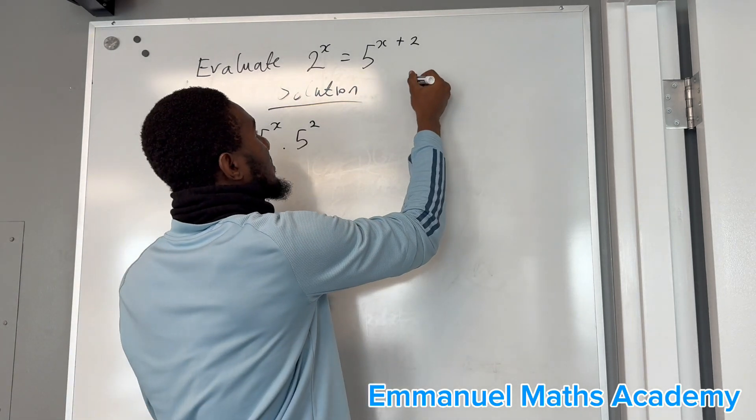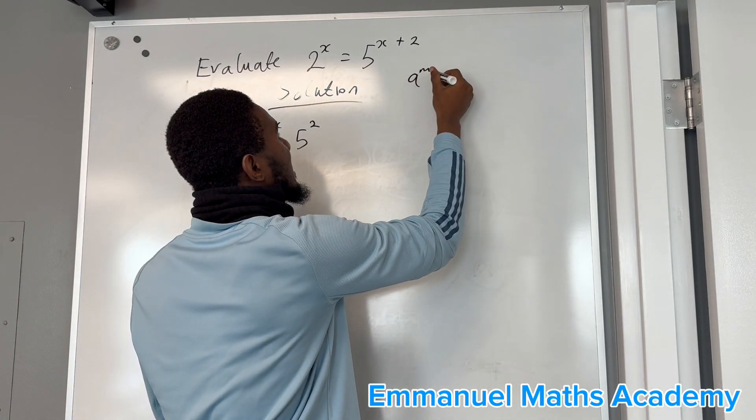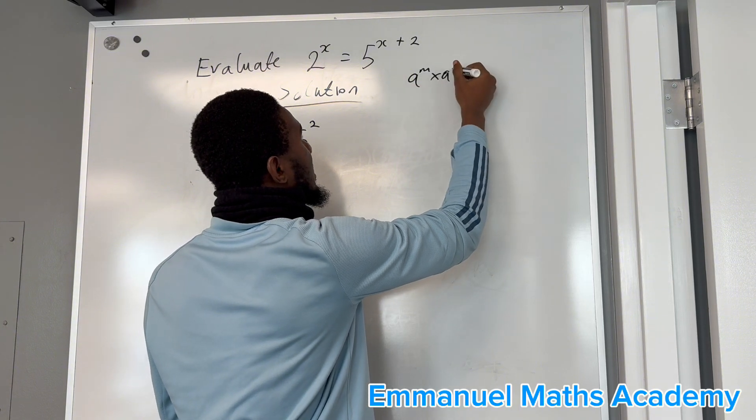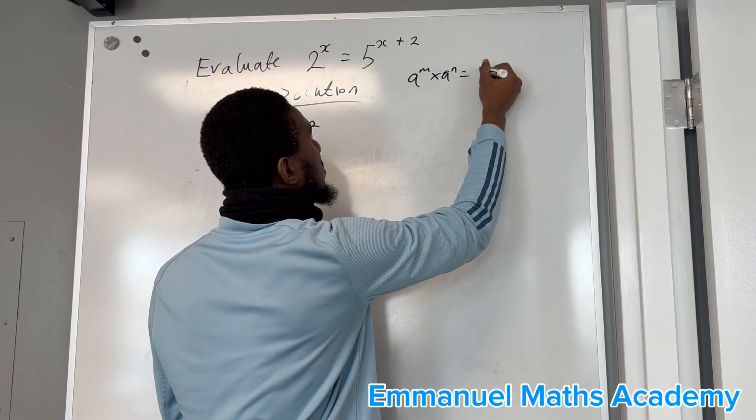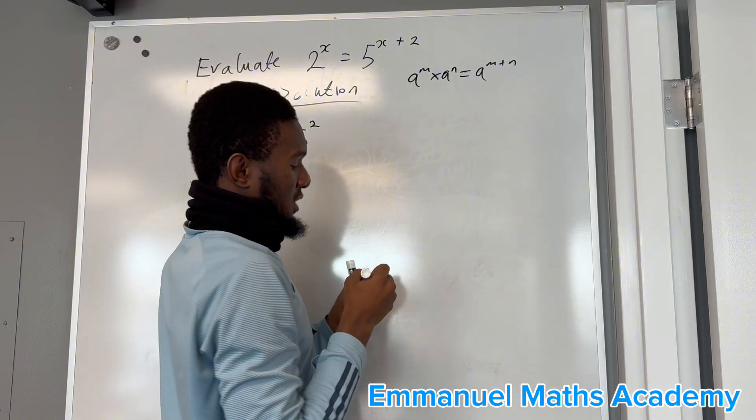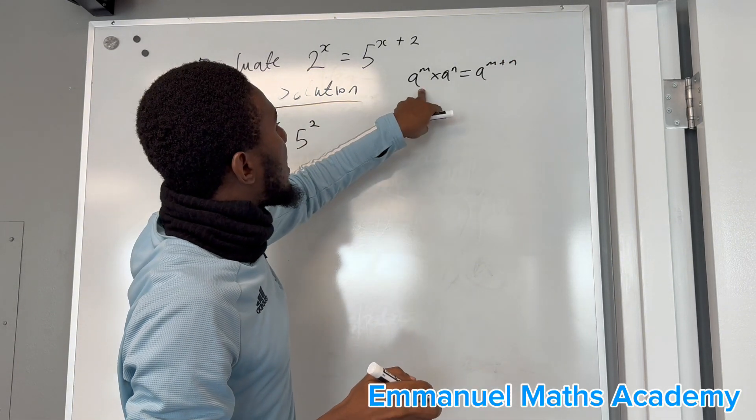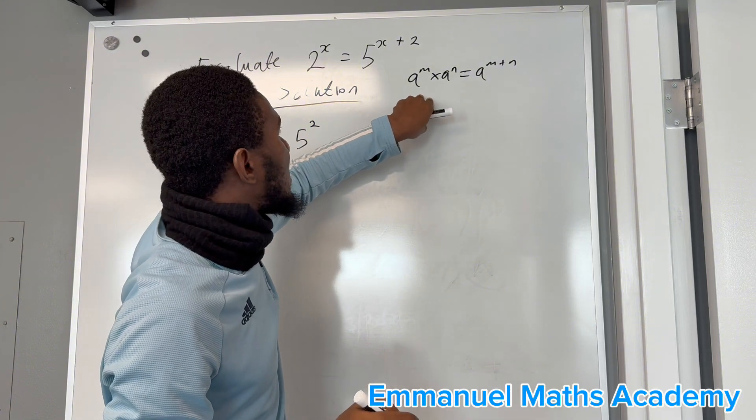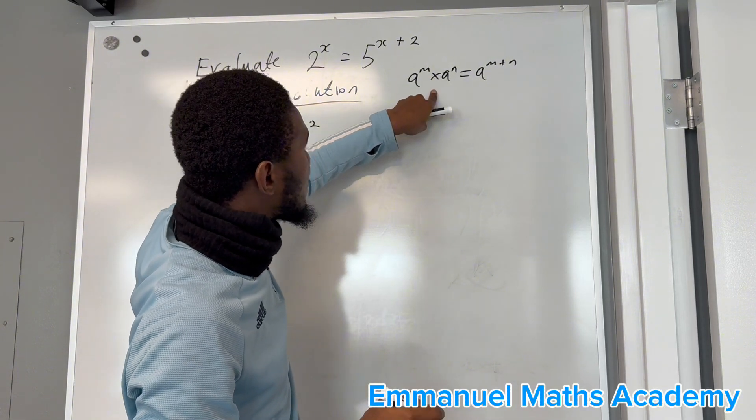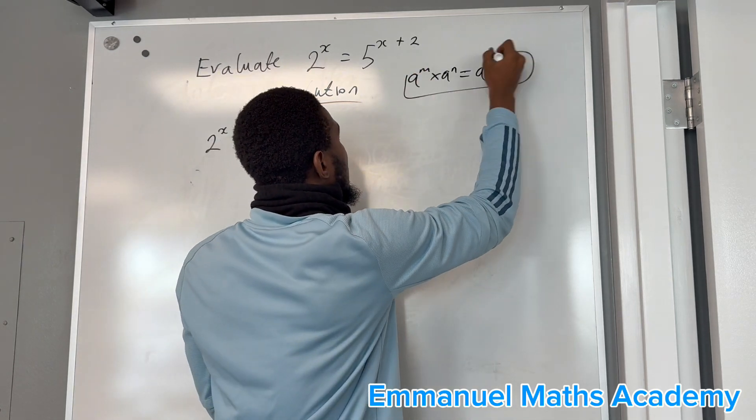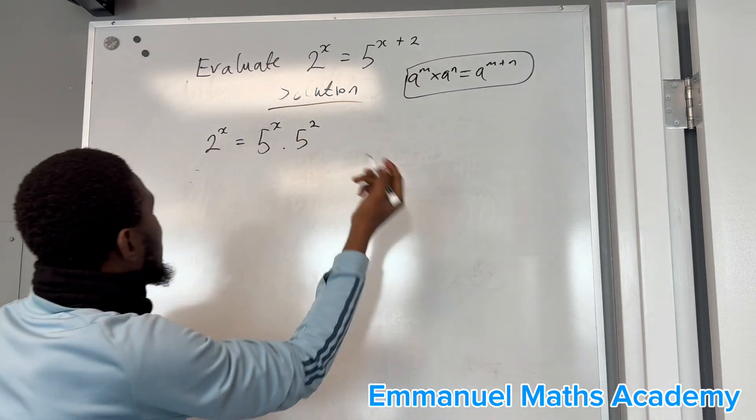This law says that a power m times a power n equals a power m plus n. So if you have two numbers with the same base multiplying each other, you can add the powers together. Applying this, we get this result.